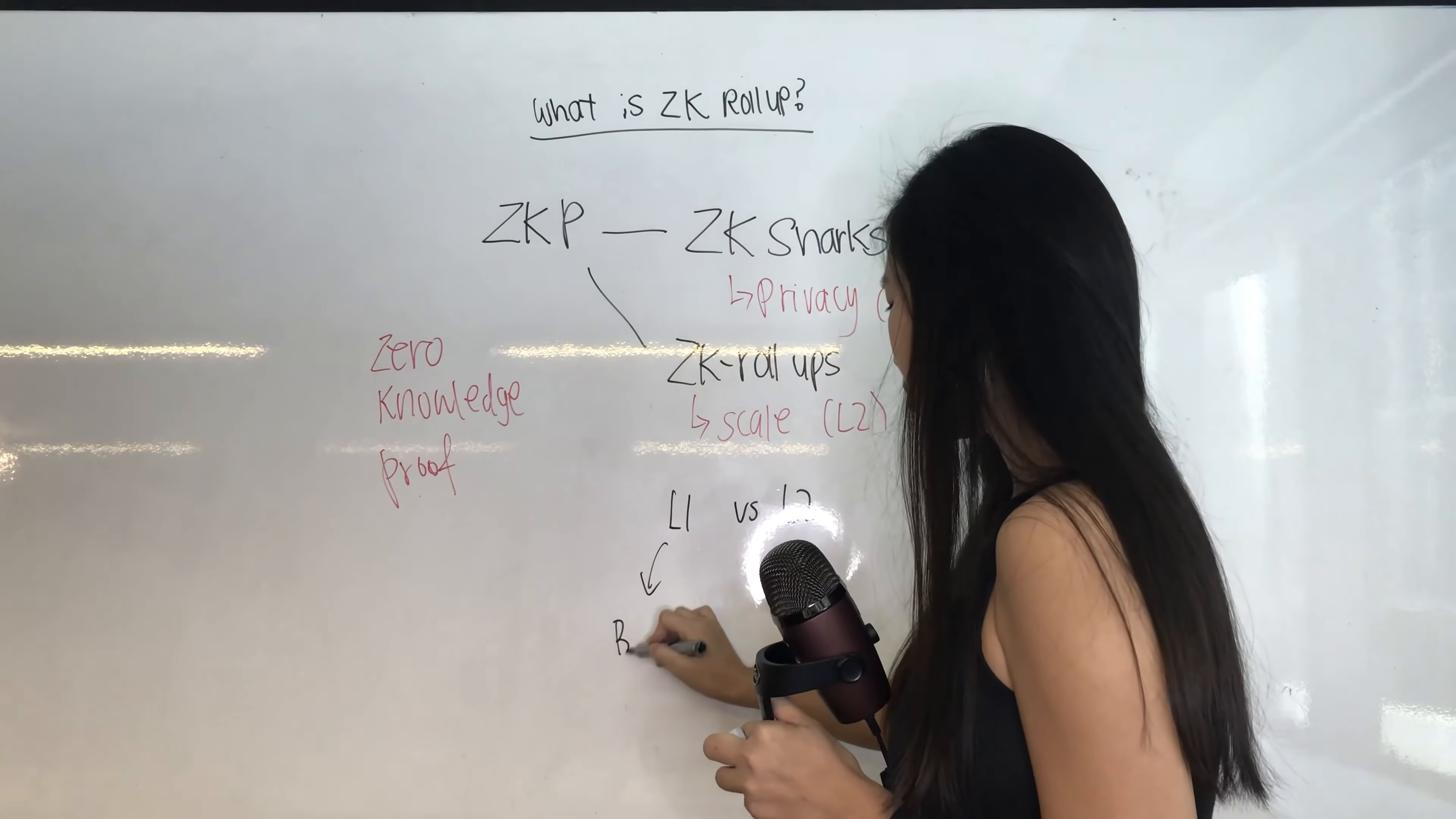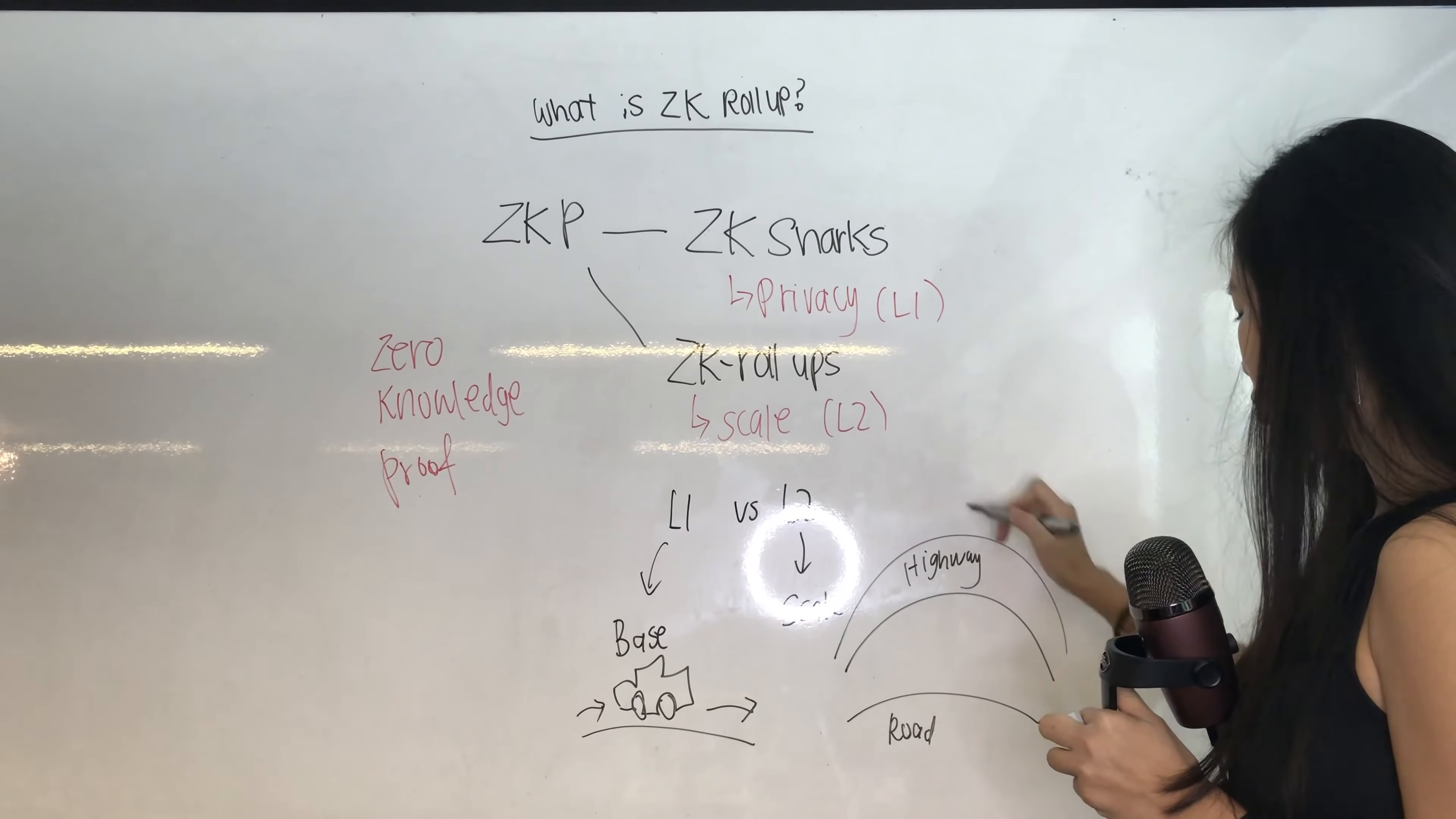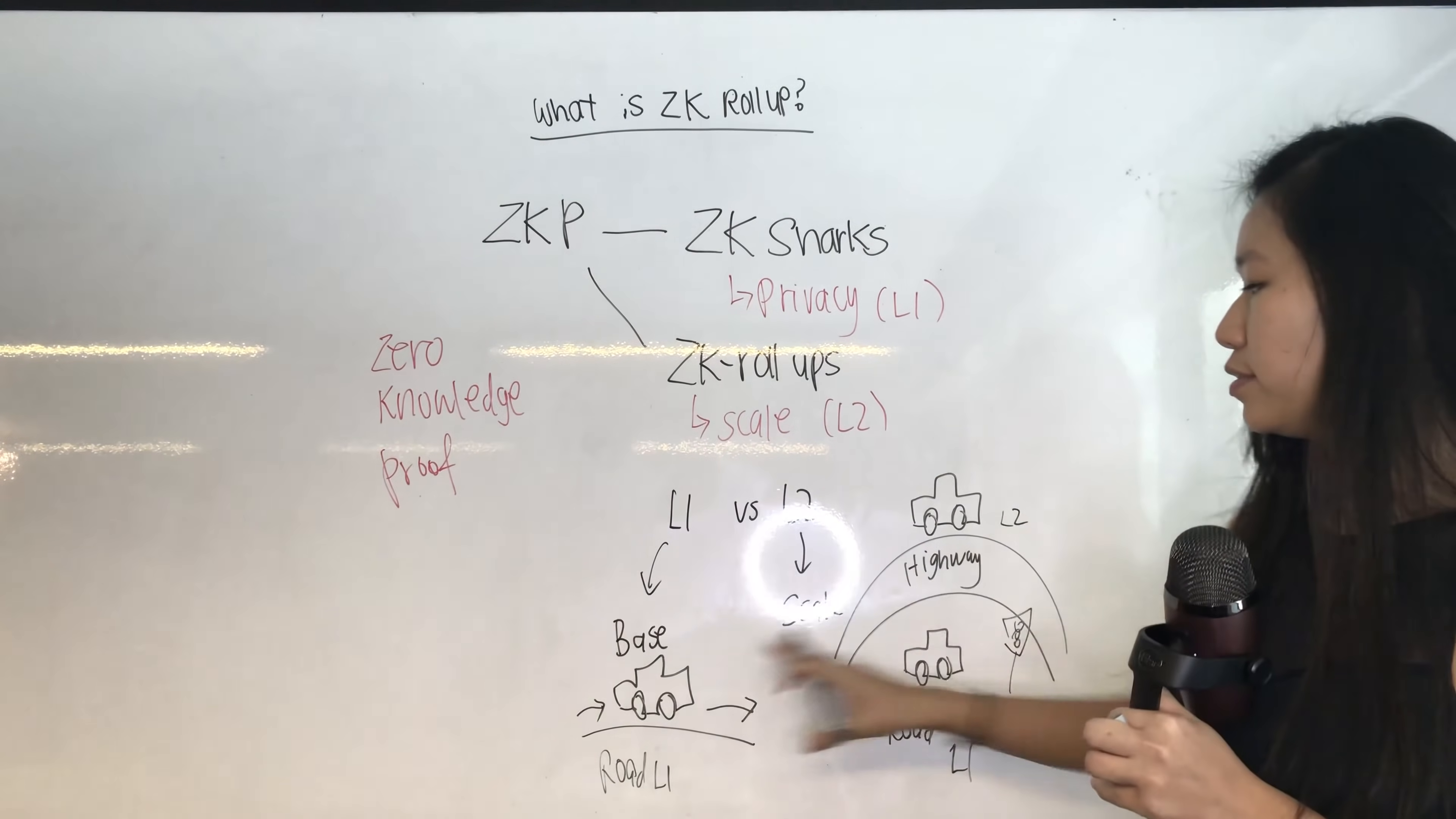Layer one is really the base layer. Layer two is the scalability layer. If we want to think of the analogy of roads, then layer one will be your regular road where you have a car going from destination A to destination B on a regular road. Scalability is where you have a road here and then you have a highway. So cars can go on the highway and cars can go on the road. This is the road here, it's your layer one solution. And your highway is your layer two solution.